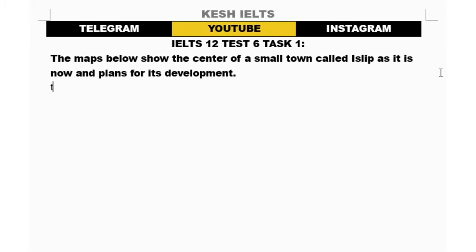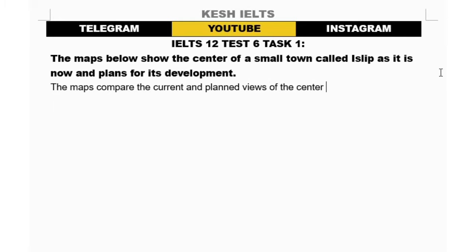First of all, I'm going to write: 'The maps compare the current and planned views of the center of Islep town.' I'm not sure exactly how it's pronounced since it's an English town, but that's how I'll say it. So that's the introduction — just describing what the maps show.